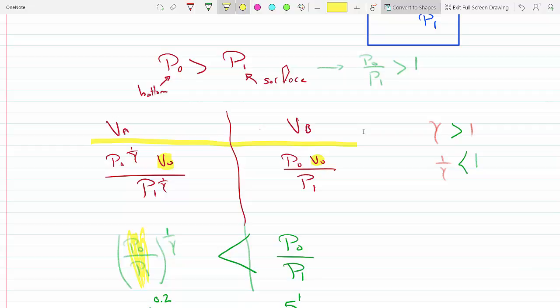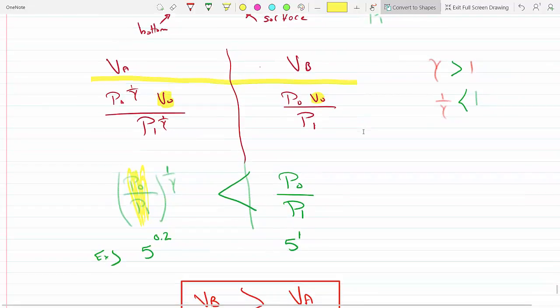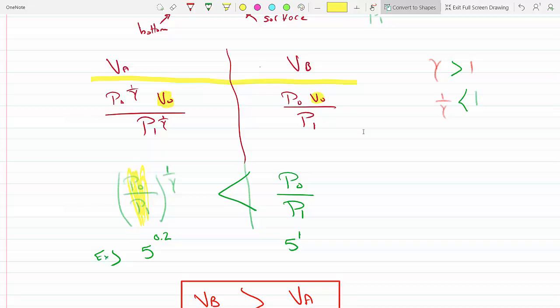So here we have a number inside which is greater than one raised to a number that is less than one, as an example five raised to the 0.2. Whereas on the right hand side we have the same ratio greater than one but raised to one.